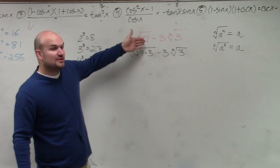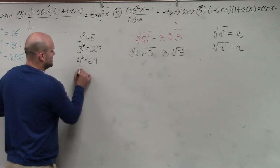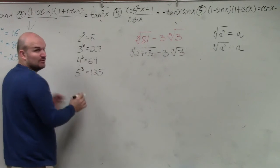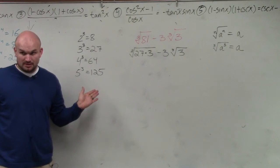You cannot write 81 as a number raised to the third power. Because the next one is 5 cubed, which is 125, right? Do you guys agree that 81 is not a cube number?